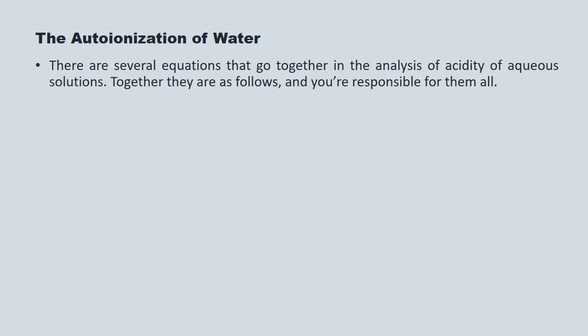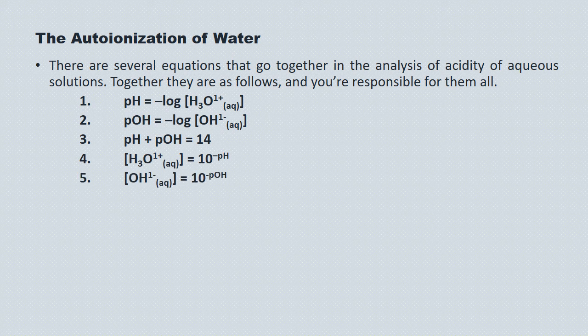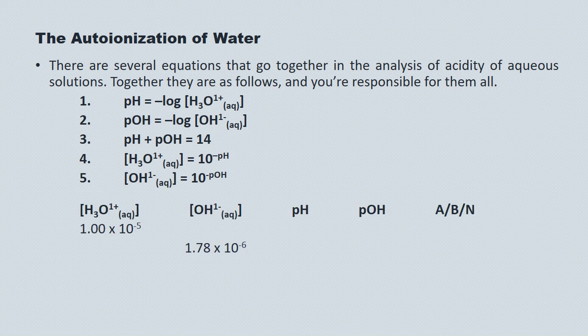There are several equations that work together to help us analyze acidity of aqueous solutions: the pH equation, the pOH equation, the sum of pH and pOH, the concentration of hydronium, and the concentration of hydroxide. We're now adding the Kw equation to this system. Typically the questions appear as tables where you're given hydronium and must solve for hydroxide, pH, pOH, and whether the solution is acidic, basic, or neutral. In the second row, you're given hydroxide concentration and must solve for hydronium, pH, pOH, and acid/base/neutral classification.